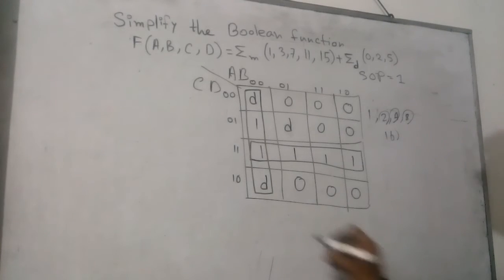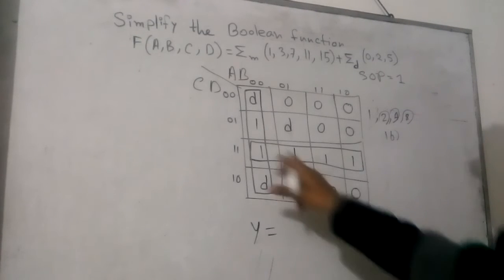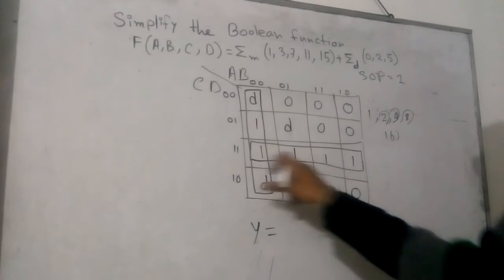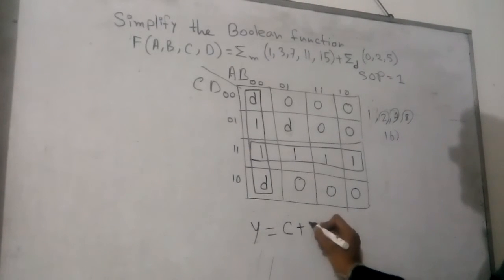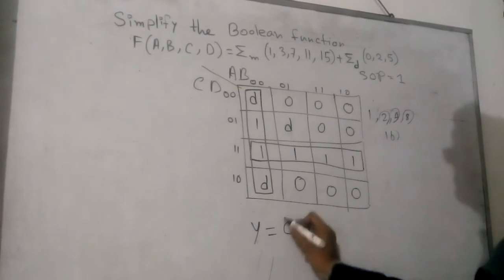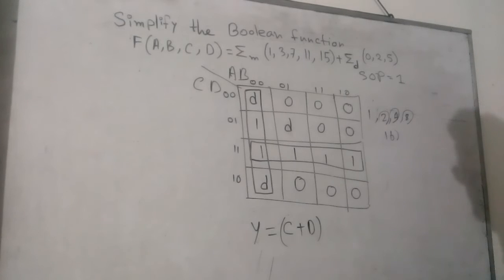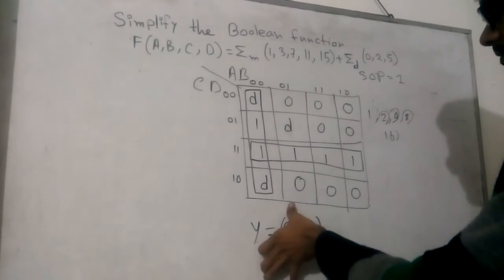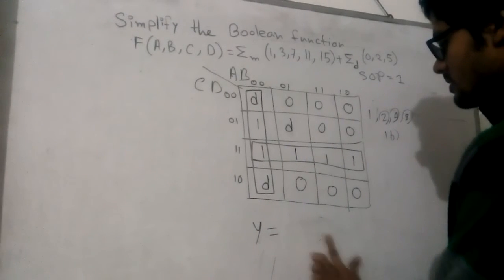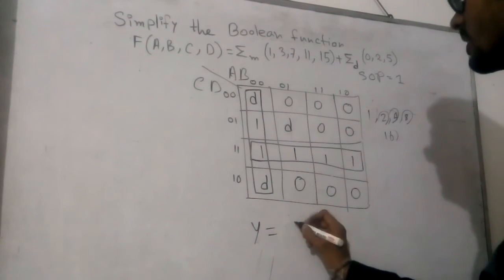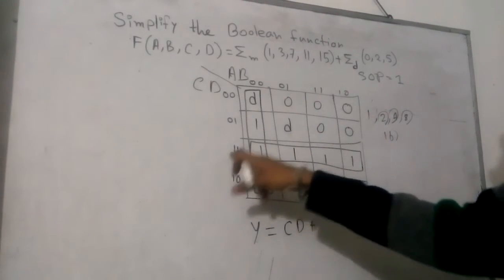So our answer will be Y equals: from this row, the answer is... sorry, not C plus D. As we are solving SOP, it will be CD plus...